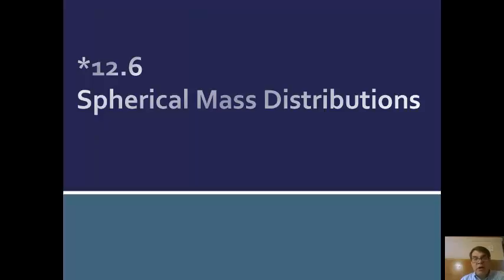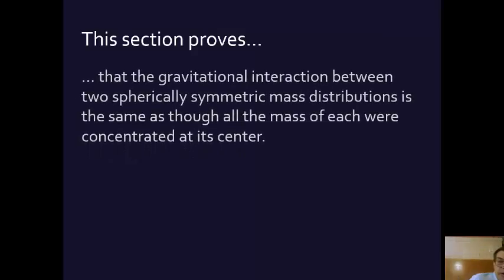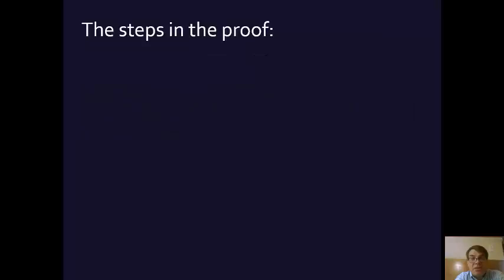So 12.6 is basically where Young and Friedman prove something that they assumed earlier on in the chapter on gravitation. This section proves that the gravitational interaction between two spherically symmetrical mass distributions is the same as if they were both two points at the center of each. They've assumed this, but because they're good mathematicians and scientists, they want to prove it. And so here are basically the steps.